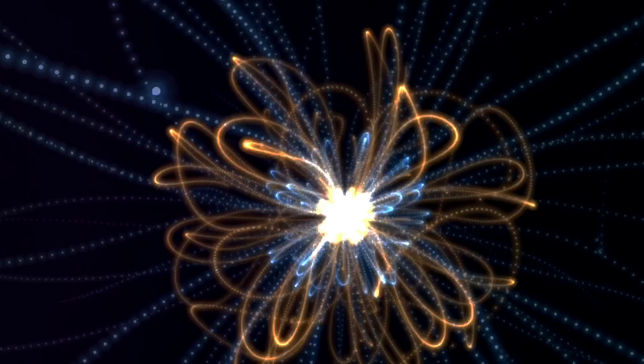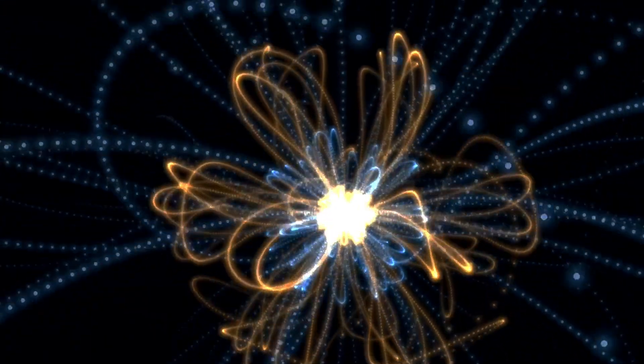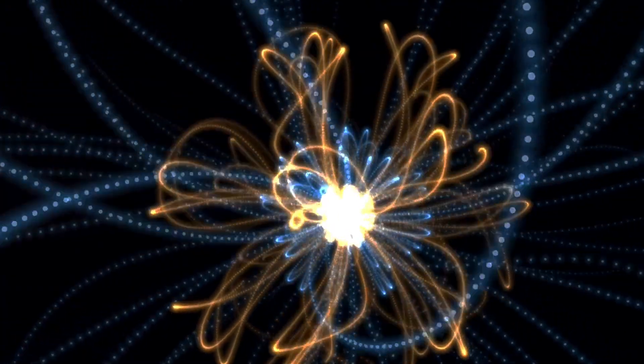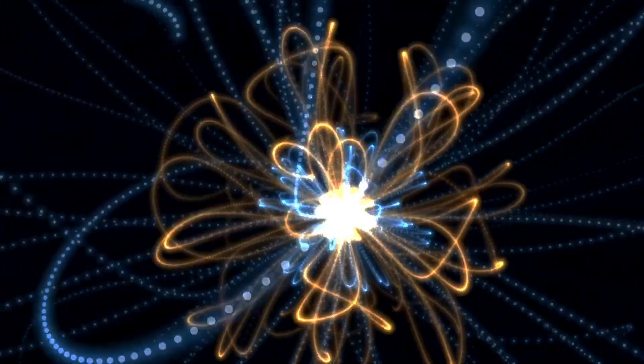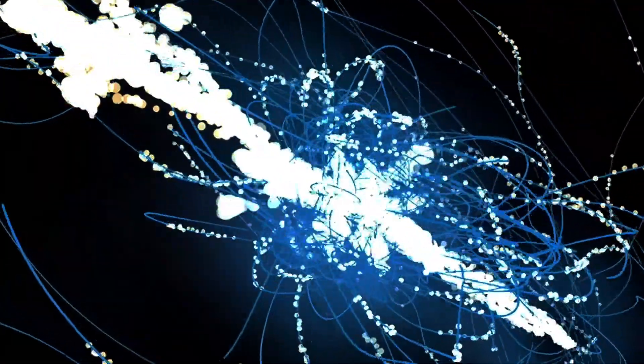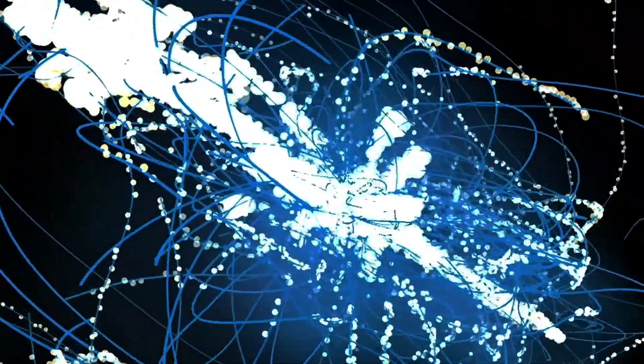Picture this: two subatomic particles like photons or electrons become so deeply linked that the state of one instantly influences the state of the other, regardless of the distance separating them. This connection is so profound that even sending these particles to opposite ends of the universe wouldn't break their bond.